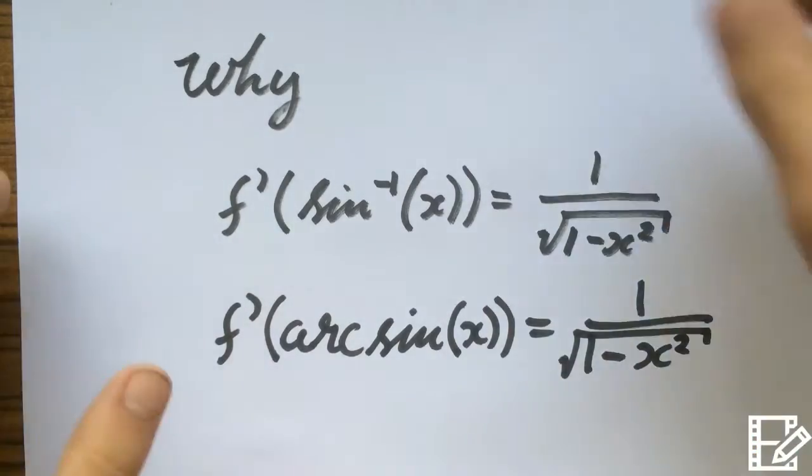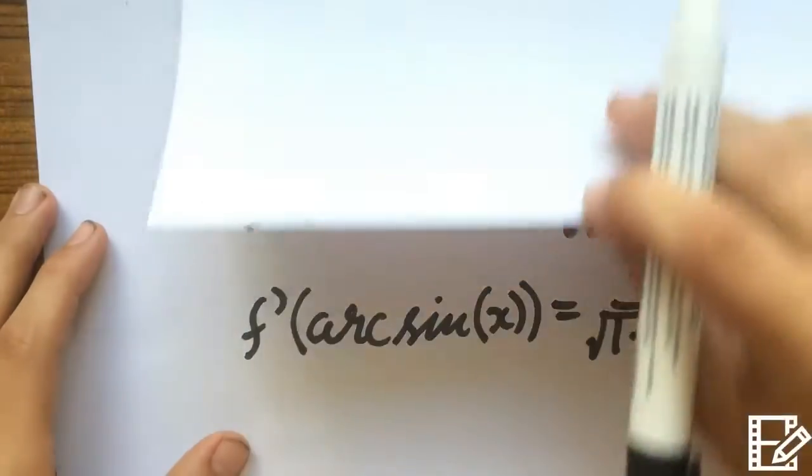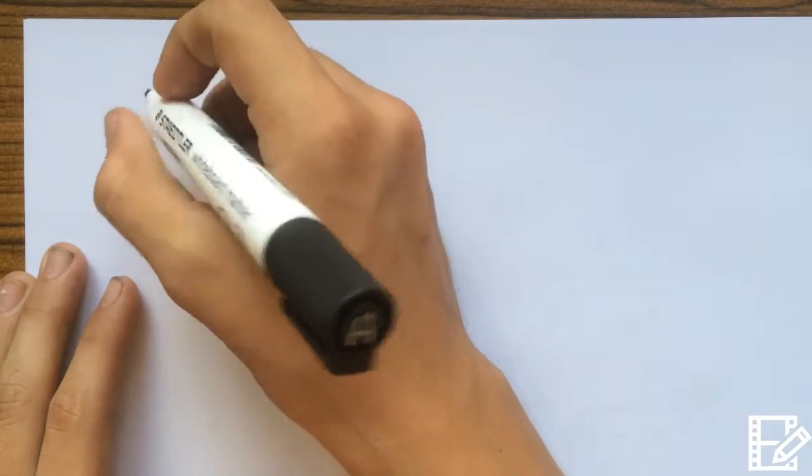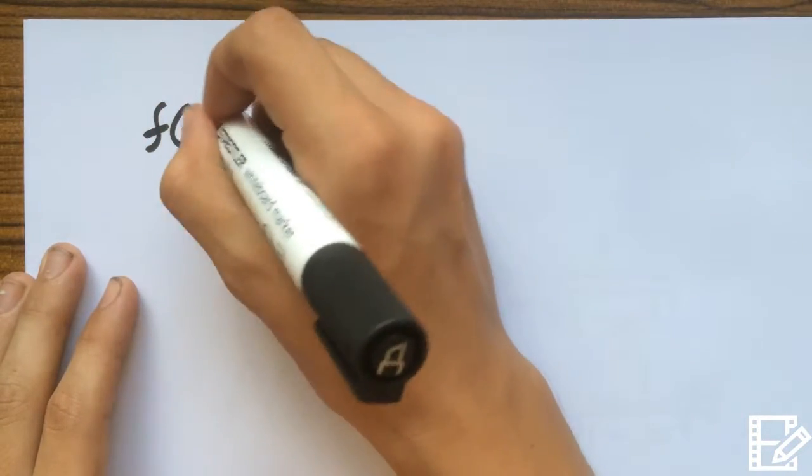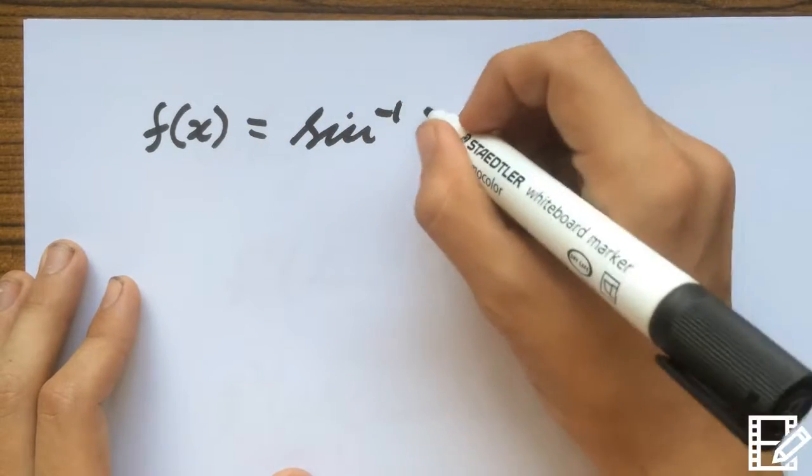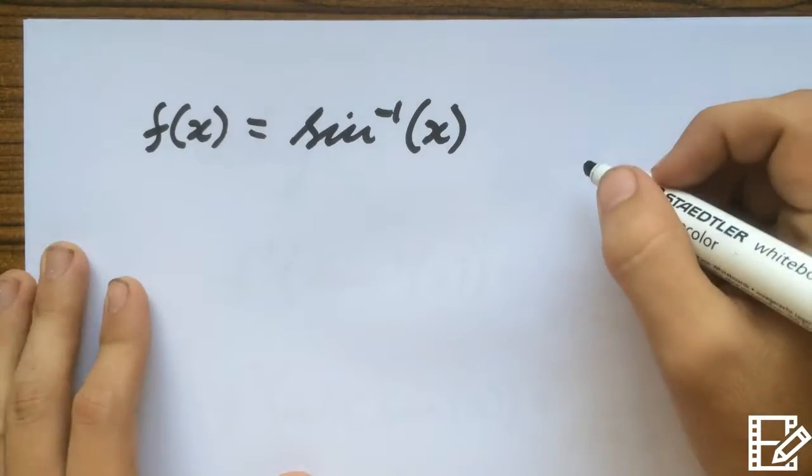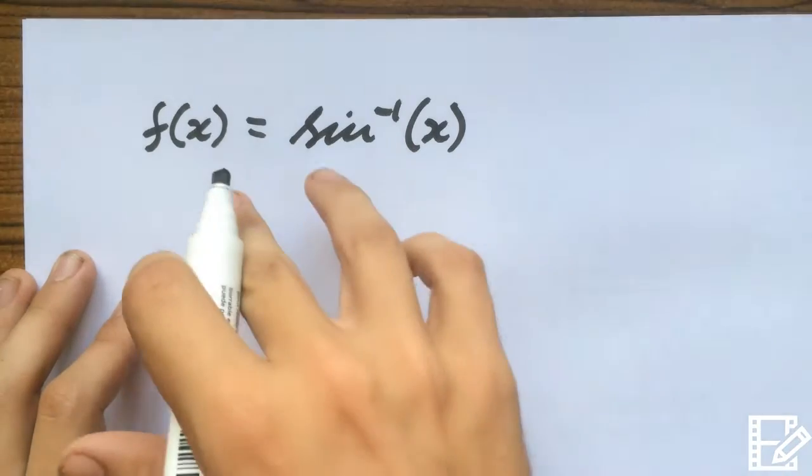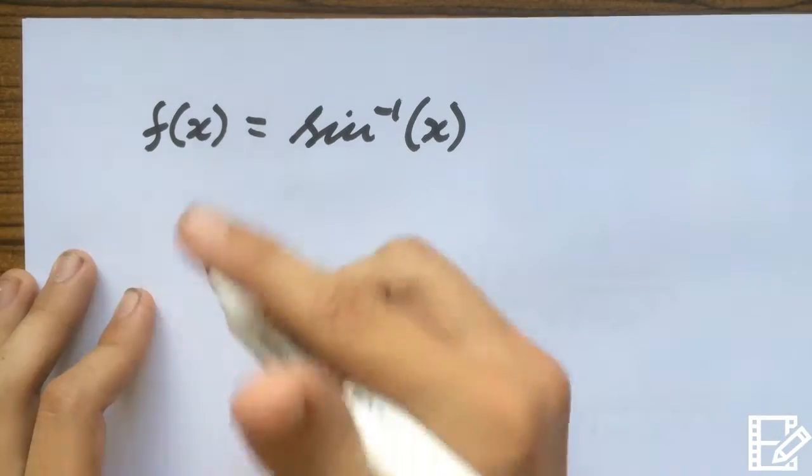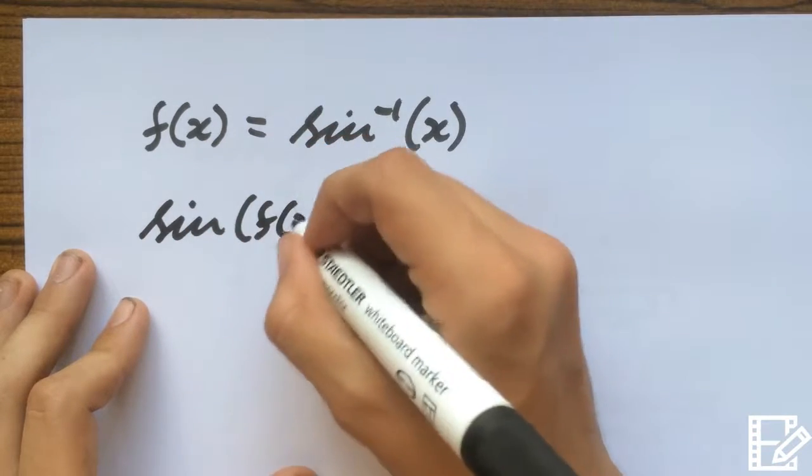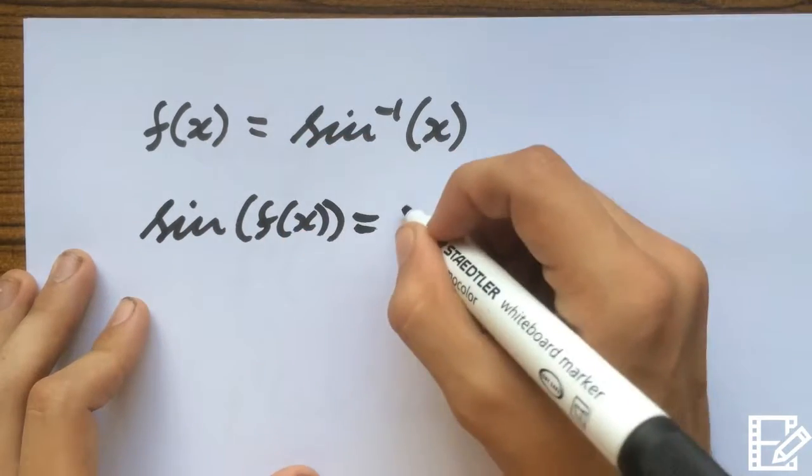So I'll show you why. We have to start off with our function, and that equals sin^(-1)(x). Now, what is that the same as? Well, not the same, but if we rearrange sine onto the other side, it will look like this. I'll explain what I mean by rearranging.